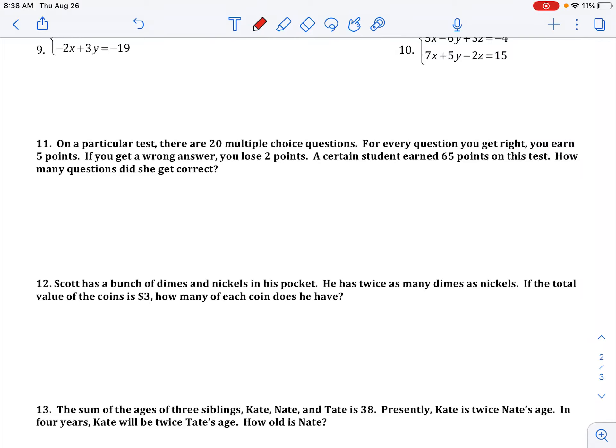Problem number 11. If we want to write our system, writing the systems is typically the most difficult part of these word problems. So we have a particular test with 20 multiple choice questions, and for every one you get right you earn 5 points, and for every one you get wrong you lose 2 points.